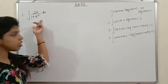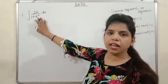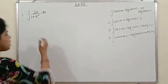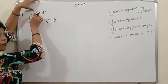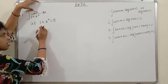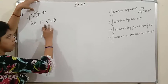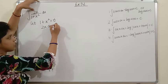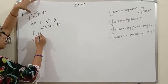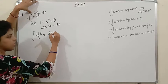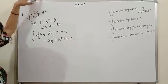Question 1: ∫2x/(1 + x²)dx. Notice the numerator is the derivative of the denominator — this is in the form f'(x)/f(x). So let 1 + x² = t. Differentiating: the derivative of 1 is 0, derivative of x² is 2x, so 2x dx = dt. Substituting, the integral becomes ∫dt/t = log|t| + c = log|1 + x²| + c.